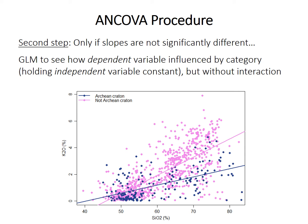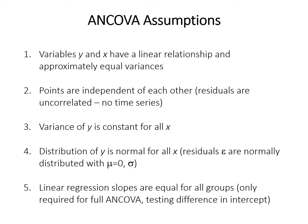Without an interaction, if the categorical term in the model is significant, that indicates a significantly different intercept. ANCOVA has all the standard linear regression assumptions, plus a further requirement that the regression slopes must be equal for all groups or factor levels. You can test for significant slope differences in the first step, but you can only test for intercept differences in the second step if the slopes don't differ significantly.